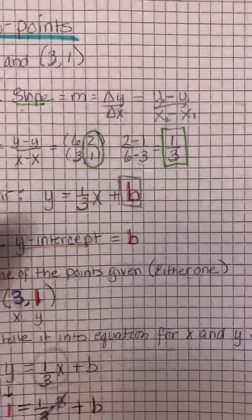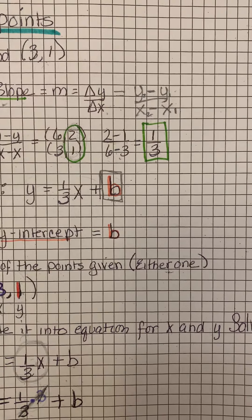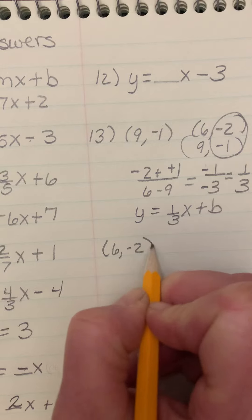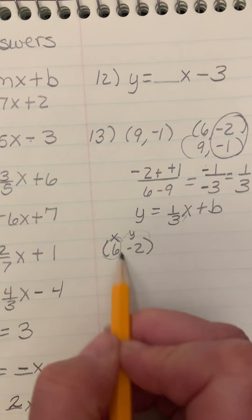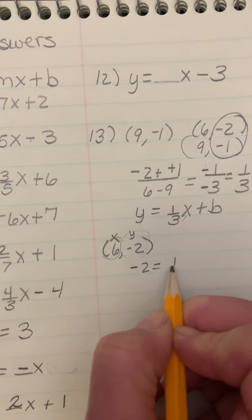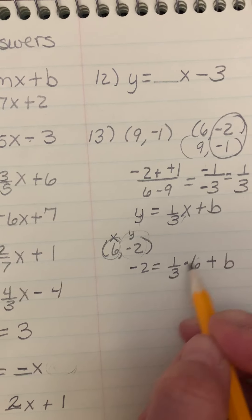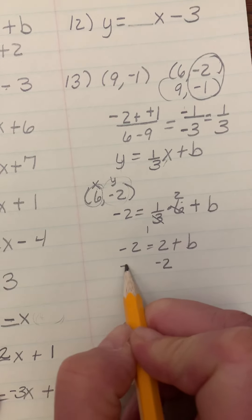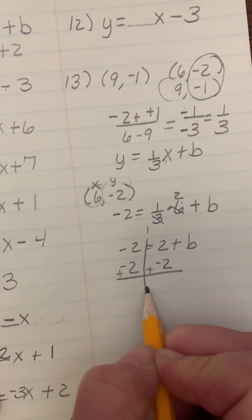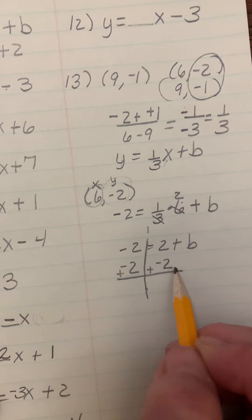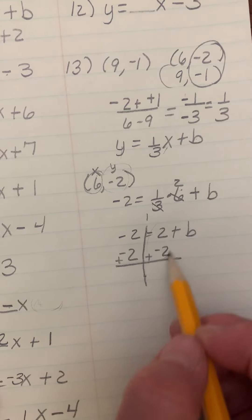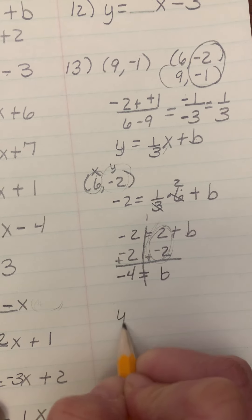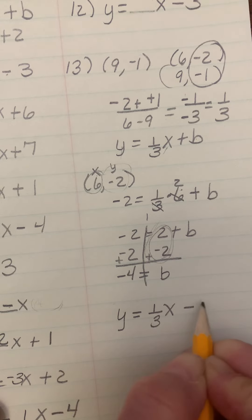Now I need to find the y-intercept. Pick one of the points — I'll use (6, -2). Substitute into y = mx + b: -2 = (1/3)(6) + b. That simplifies to -2 = 2 + b. Apply the additive inverse to both sides — we've been doing one-step equations since chapter 3 — and b = -4. So the equation is y = (1/3)x - 4.